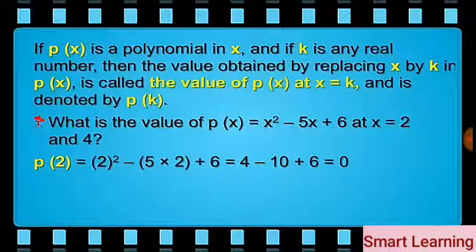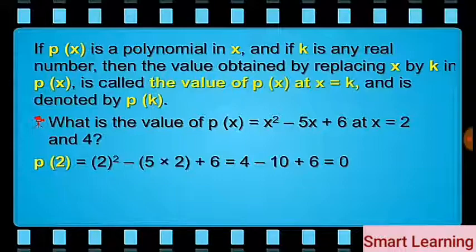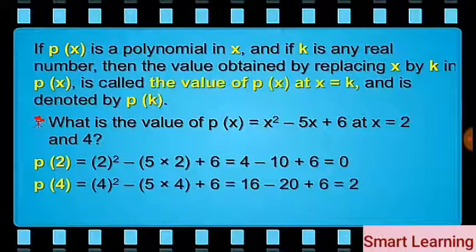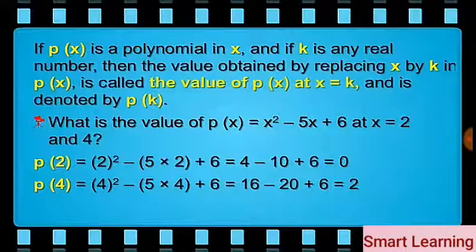We have p of 2 equal to 2 squared minus 5 into 2 plus 6, which equals 4 minus 10 plus 6, which is equal to 0. And p of 4 equal to 4 squared minus 5 into 4 plus 6, which equals 16 minus 20 plus 6, which is also equal to 2.